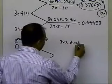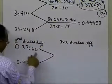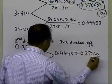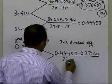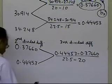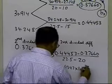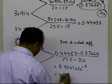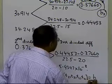I'm going to calculate my third divided difference, and that will be 0.44453 minus 0.37660 in the numerator, and in the denominator t3 minus t0, which is 22.5 minus 20. This number turns out to be 5.4347 times 10 to the power minus 3. That's the third divided difference at points t3, t2, t1, and t0, which is nothing but b3.